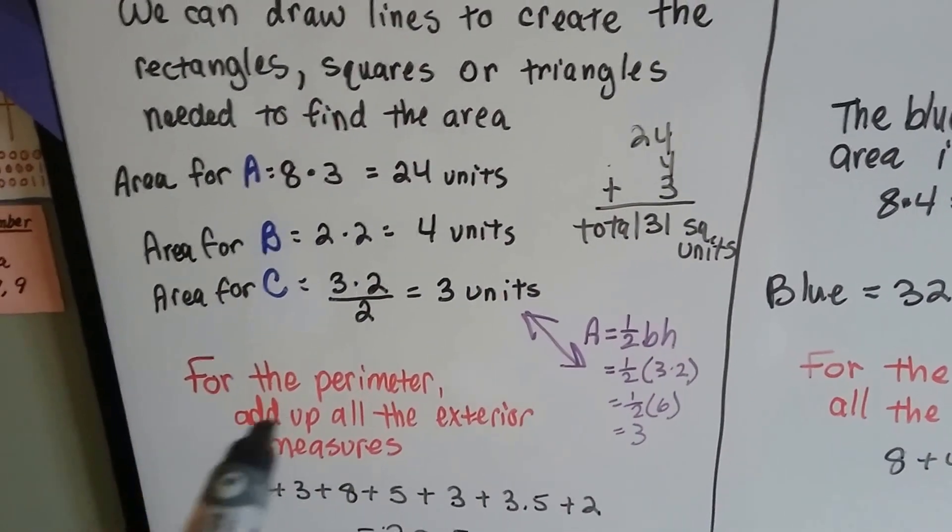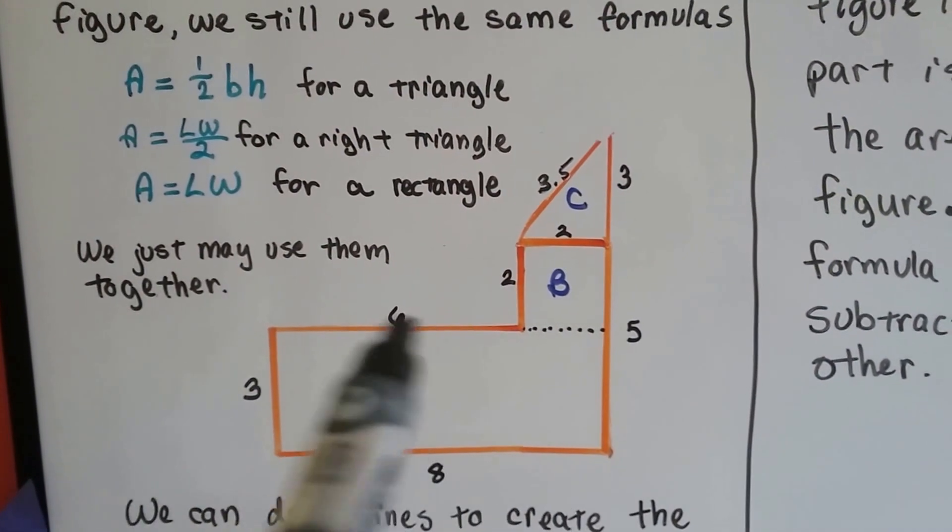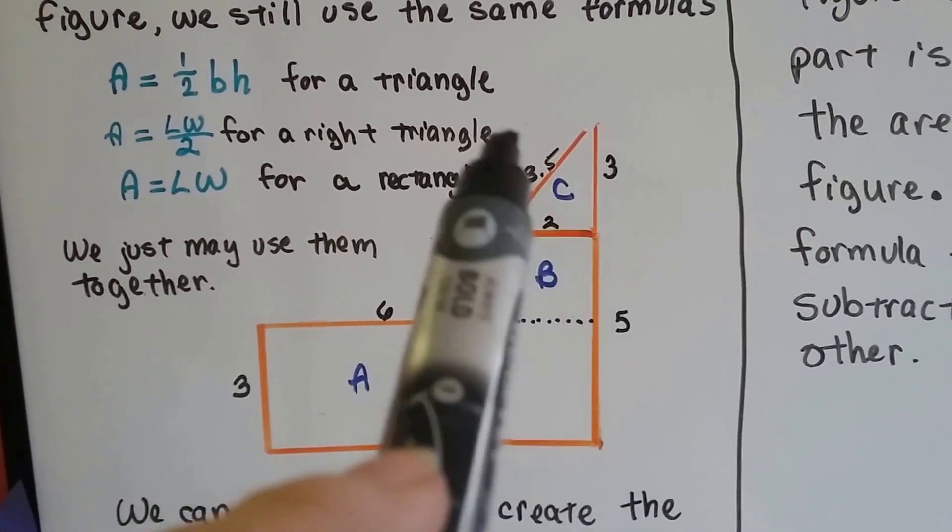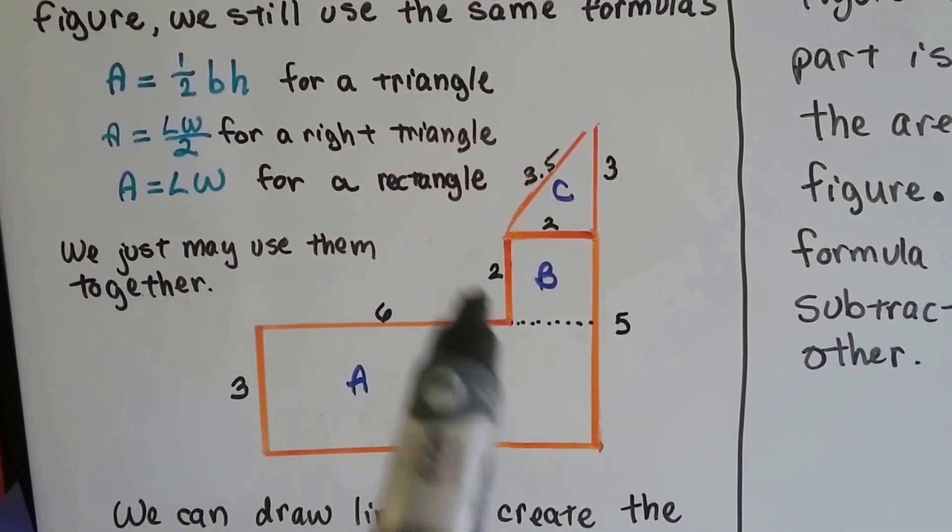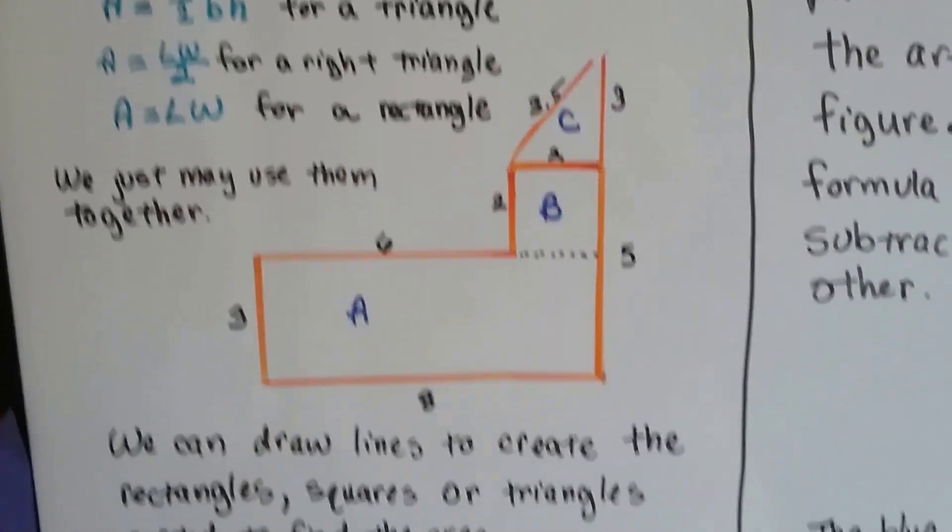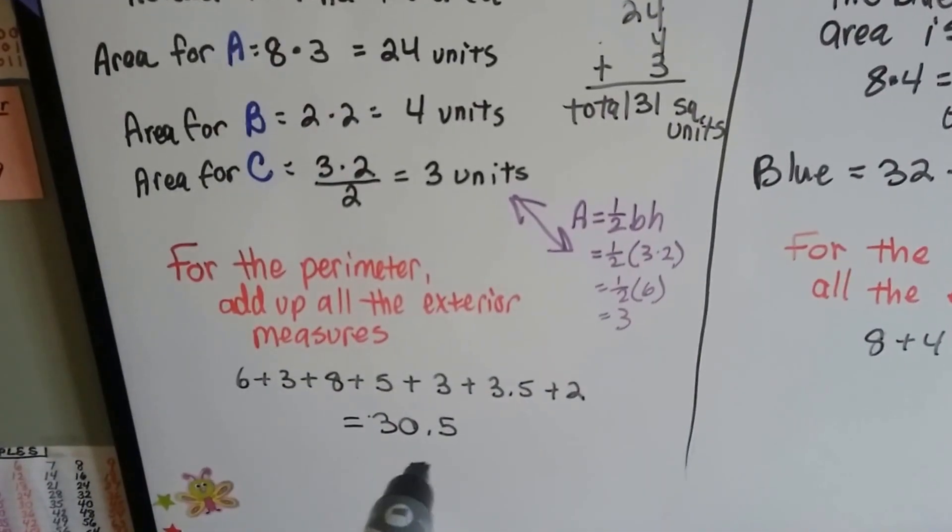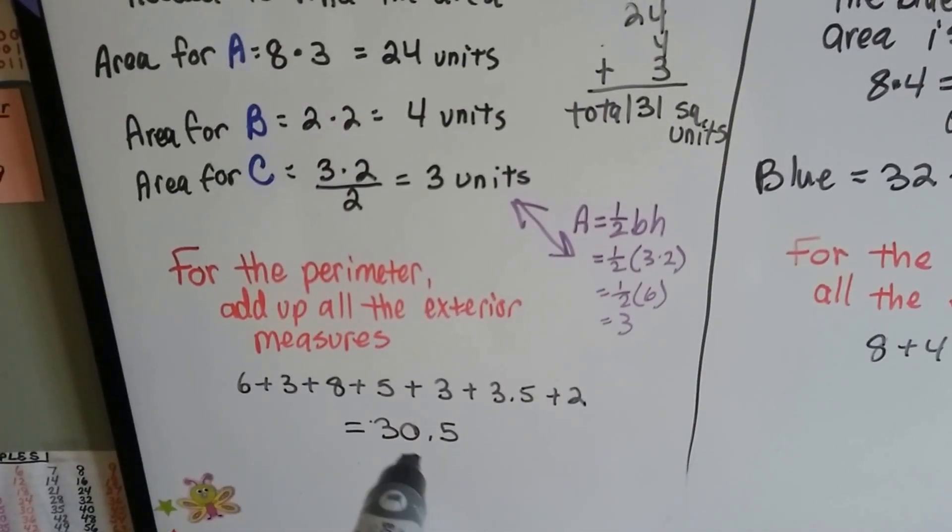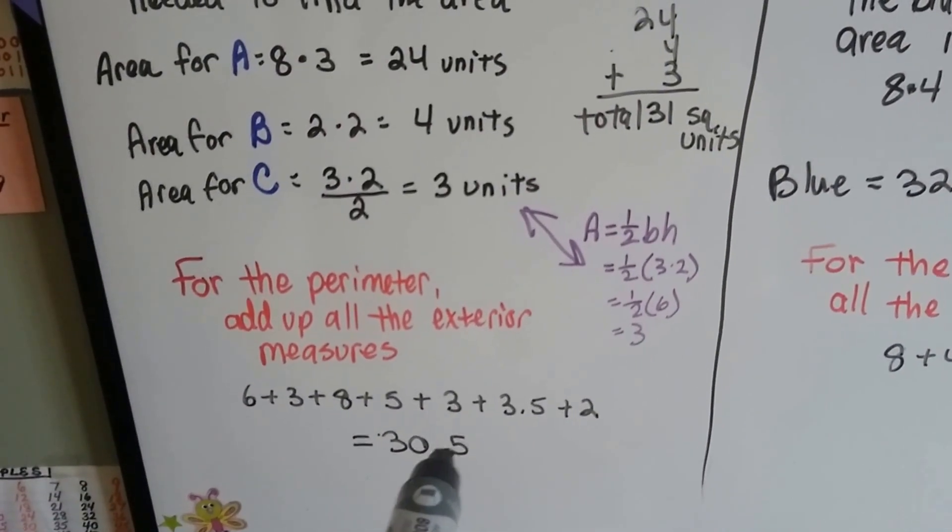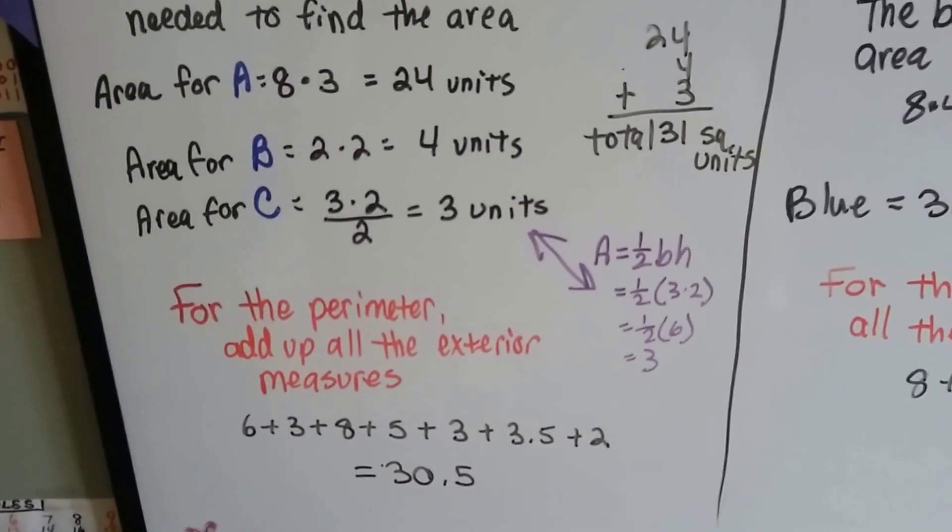For the perimeter, all we had to do was add the exterior measures. We added the 6, 3, 8, 5, 3, 3.5 and the 2 all around the outside, totaled them up, and the exterior, the perimeter, is 30.5. 30.5 units.